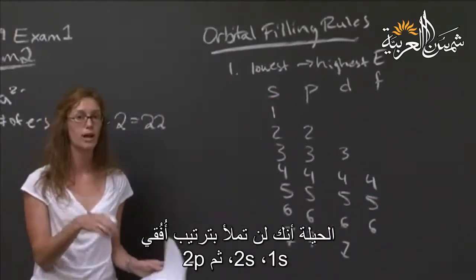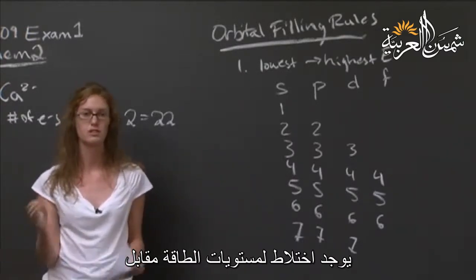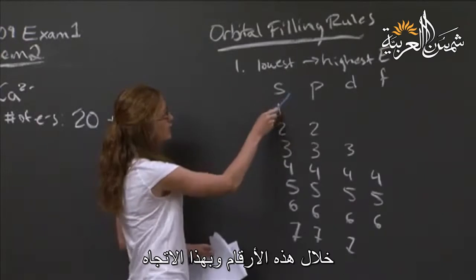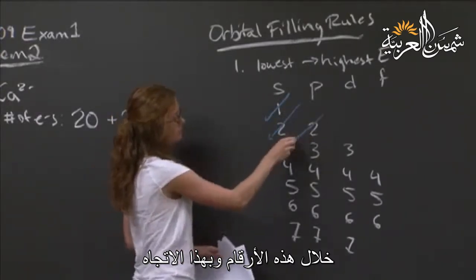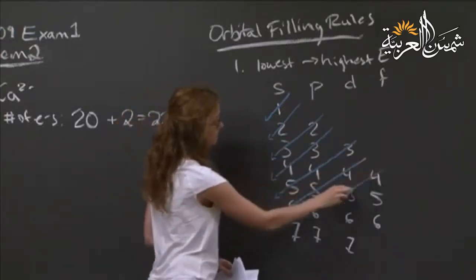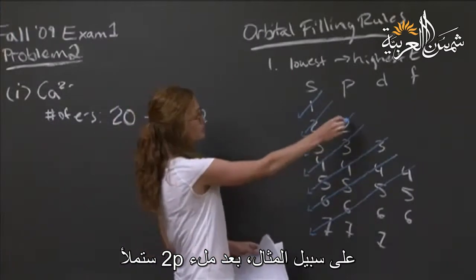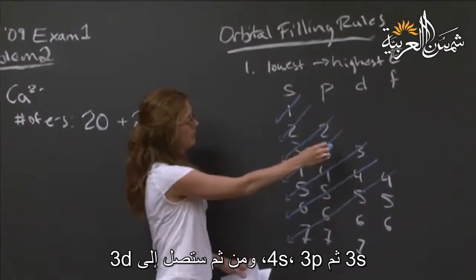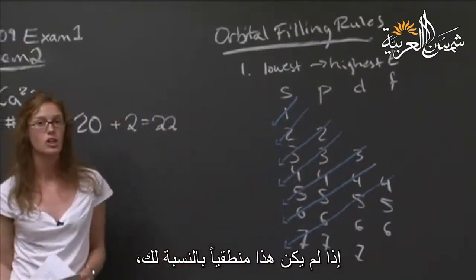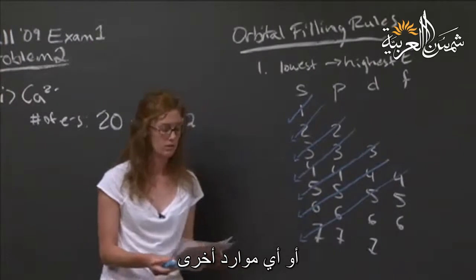The tricky part is that you don't just fill up 1s, 2s, 2p, 3s, 3p, 3d. There's a little bit of mixing up of the energy levels versus the actual energy of the orbital. A nice side of the page trick is to draw diagonal lines down through these numbers, and if you follow these arrows, you'll fill up in order of increasing energy. For example, after you fill up the 2p, you're going to fill up the 3s, then the 3p, the 4s, and then you'll go to the 3d.